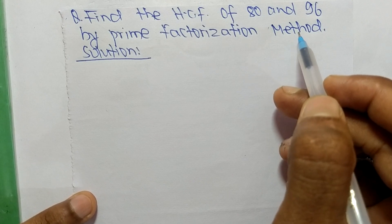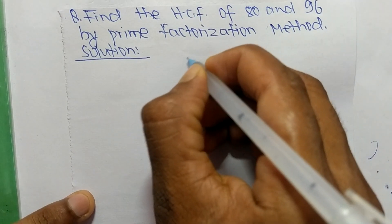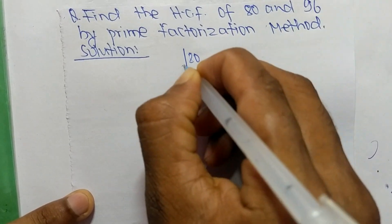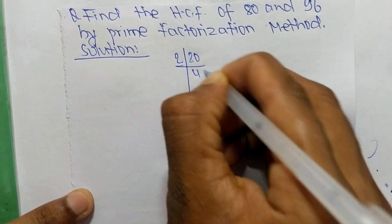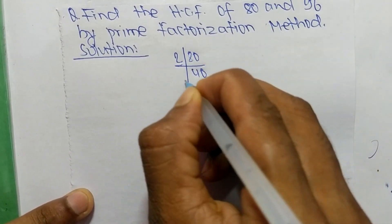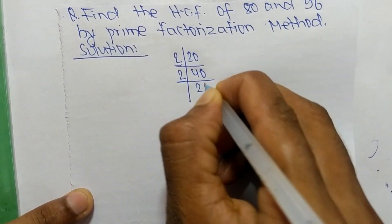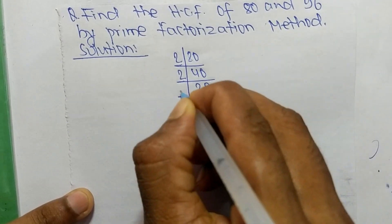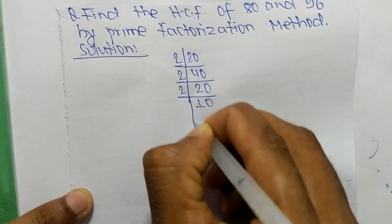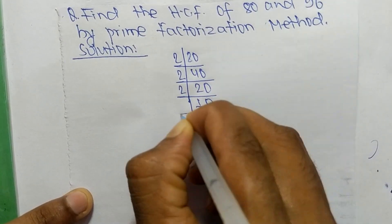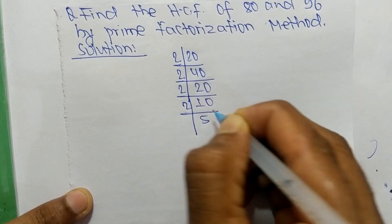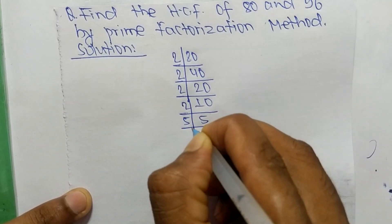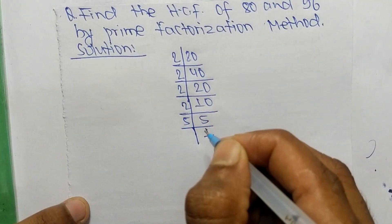First we find out the prime factors of 80. So it is 2 times 40 equals 80, 2 times 20 equals 40, 2 times 10 equals 20, 2 times 5 equals 10, and 5 times 1 equals 5.